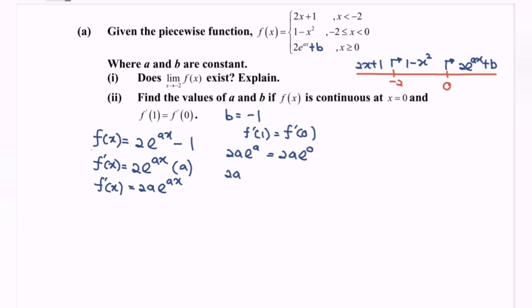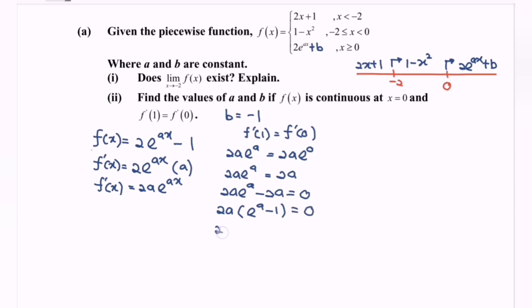Making use of the condition f'(1) equals f'(0), we substitute: 2A multiplied with exponent A equals 2A multiplied with exponent 0. So 2A times exponent A minus 2A equals 0. Factoring: 2A multiplied with (exponent A minus 1) equals 0. Therefore, either 2A equals 0 so A equals 0, or e to the power of A equals 1, and taking the natural log of both sides also gives A equals 0.